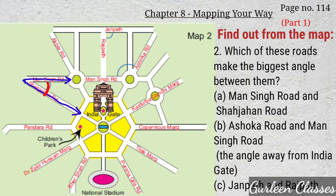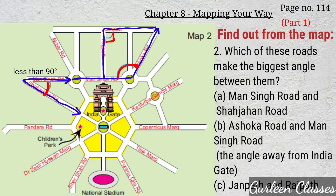Part B — Ashoka Road and Maan Singh Road, the angle away from India Gate. Here you can see Maan Singh Road and Ashoka Road, and this is the angle between them. Part C — Janpath and Rajpath. Here you can see Janpath and Rajpath. Now if you notice: Maan Singh Road and Shahjahan Road — this angle is less than 90 degrees, so it is an acute angle. Janpath and Rajpath — which angle is this? It is 90 degrees, that is a right angle. And Maan Singh Road and Ashoka Road makes the biggest angle between them — it is more than 90 degrees, so it is an obtuse angle. The correct answer is Ashoka Road and Maan Singh Road.